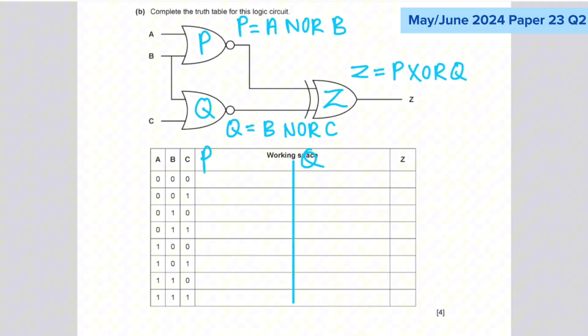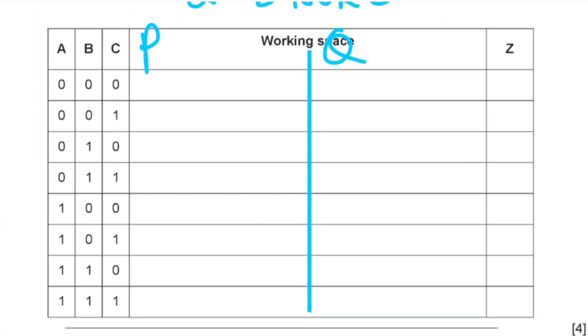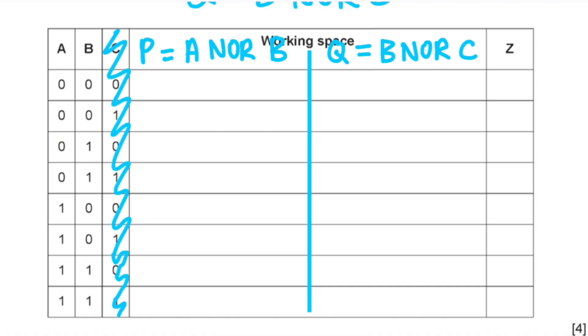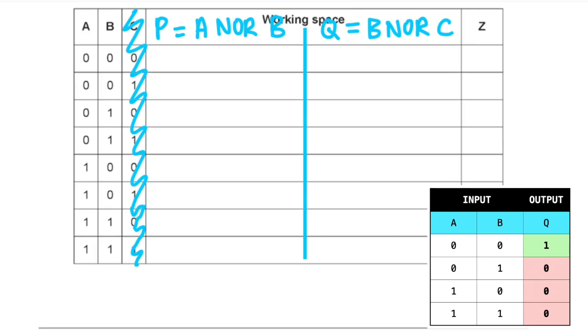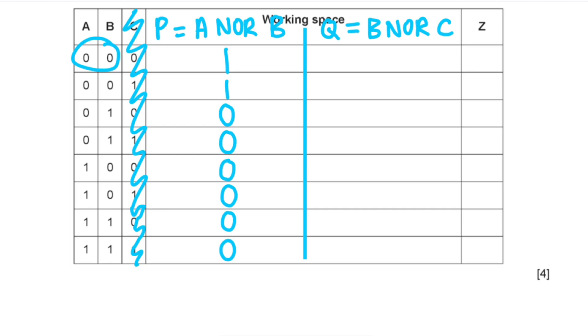So then what we're going to do is that we'll figure out P and then Q and then Z. So logic gate P here, it produces an output from A NOR B. So what we're going to do is that we're going to cover the C column and just look at A and B. And we're going to perform the NOR operation on each of these combinations. So what do we know about the NOR gate? The NOR gate will only produce a one if both the inputs are zero. So what I'm going to do is that I'm going to, every time I see two zeros, I'll just write a one. And every time it's not two zeros, we just fill it in with a zero. Because this is how the NOR gate works. So we've done that for P.